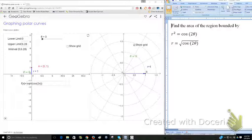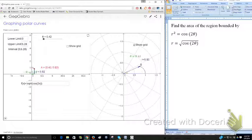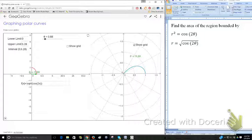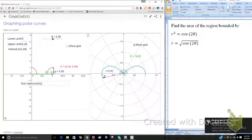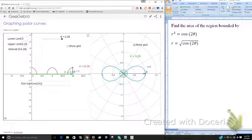Now watch what happens as I increase theta. We begin to get the beginning of our graph. Now because of the square root, there are going to be some inputs that don't yield an output, which happens here. But if I keep tracing, we do eventually see the form of our entire graph. That's what is enclosed by r squared equals cosine of 2 theta.